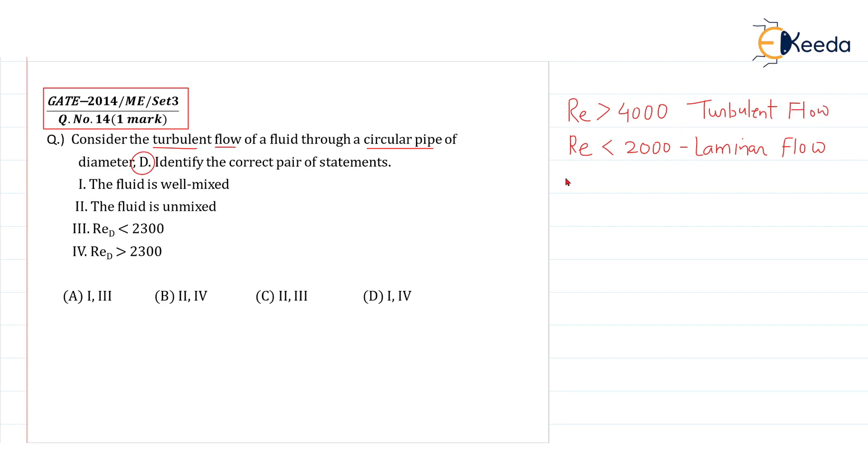And if your Reynolds number is greater than 2000, less than 4000, then we are calling this flow as transition flow. But sometimes we are neglecting the transition zone and simply we are saying either laminar or turbulent flow. In that case, we simply say Reynolds number greater than 2000 or 2300 sometimes or 2200. So this is an approximate value. So all values can be considered as correct only.